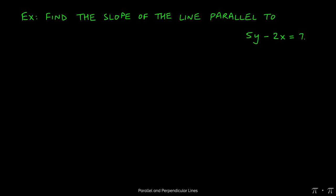In this question, we're asked to find the slope of a line parallel to 5y minus 2x equals 7.